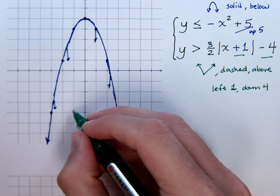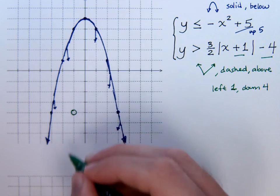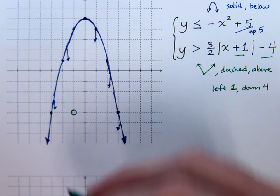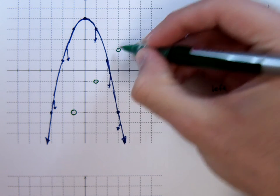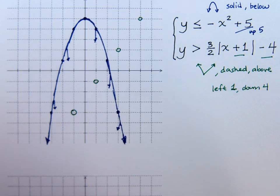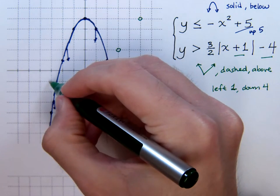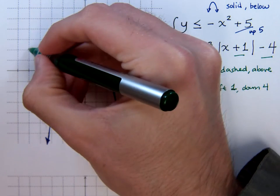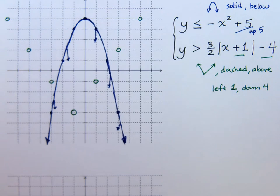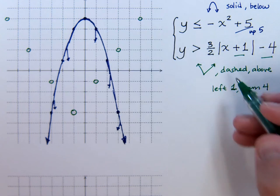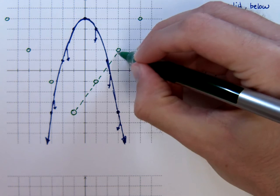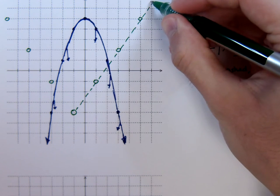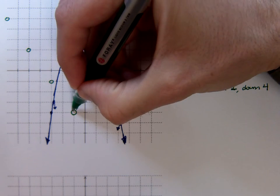Since I'm greater than but not equal to, I have to use open circles for these guys. Now use my slope, up three and over two. Go until I run out of room, and then I'm going to do the same thing here on the other side. Up three, over two. I've got my key points. Now I just need to dash my graph.